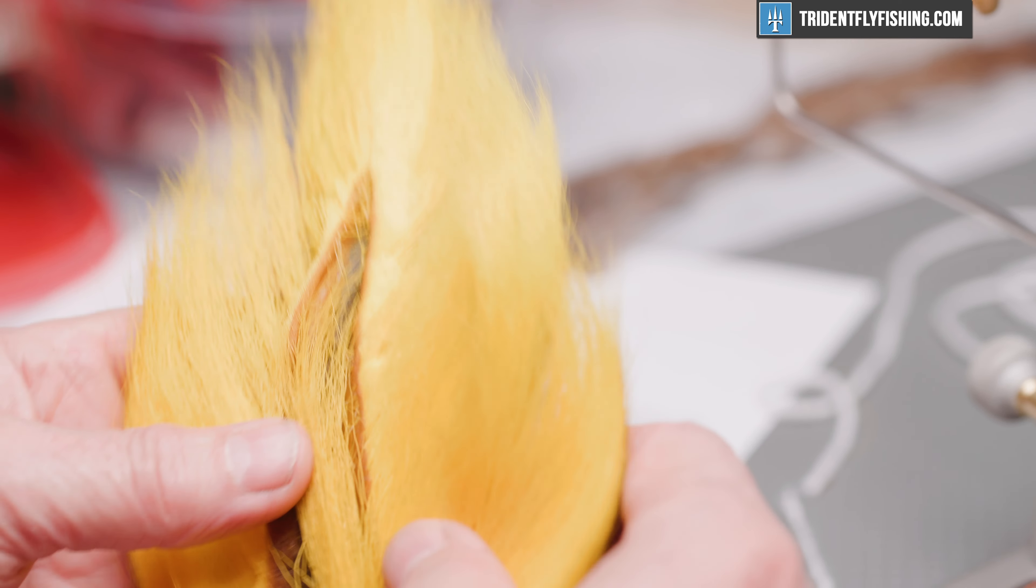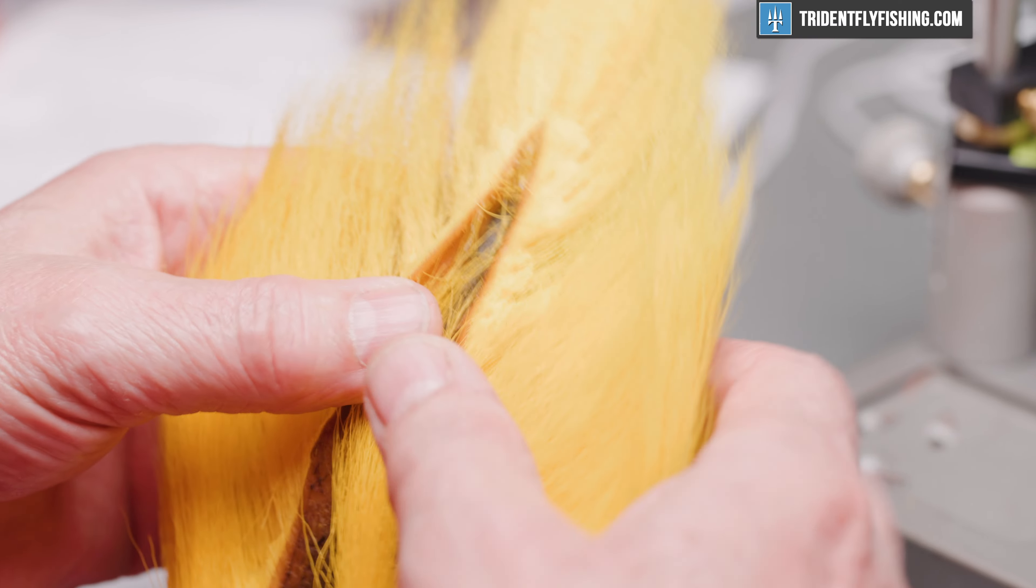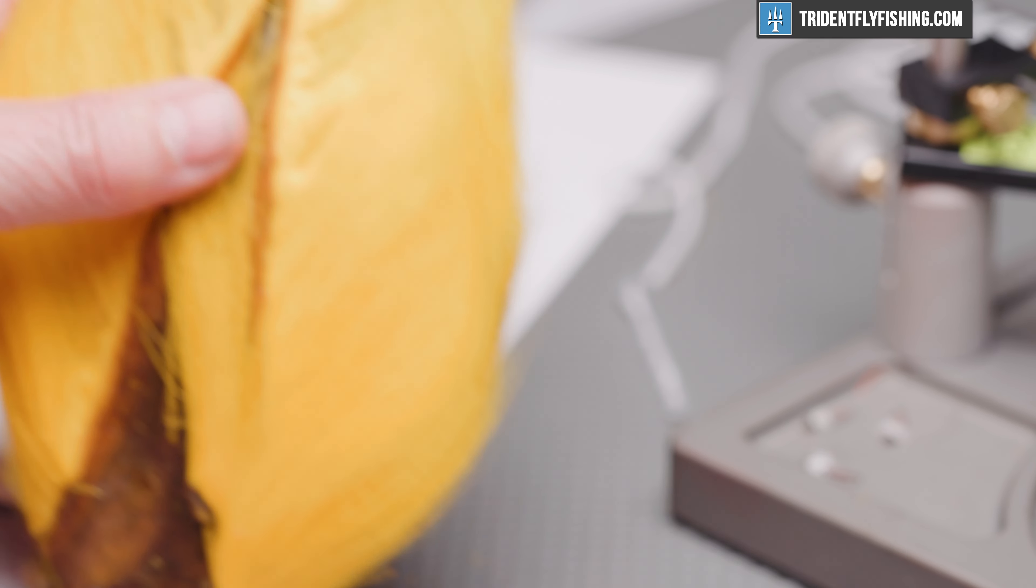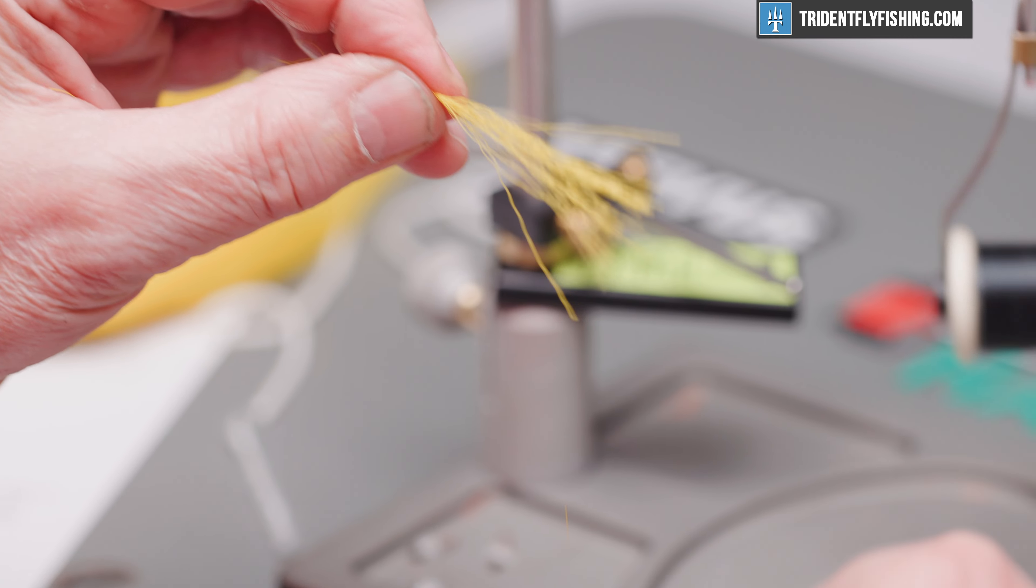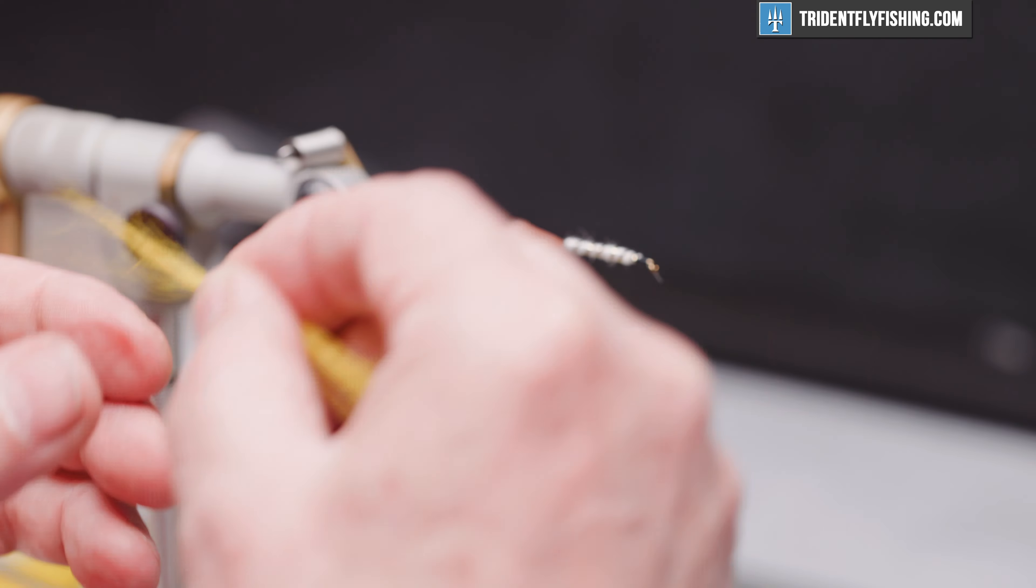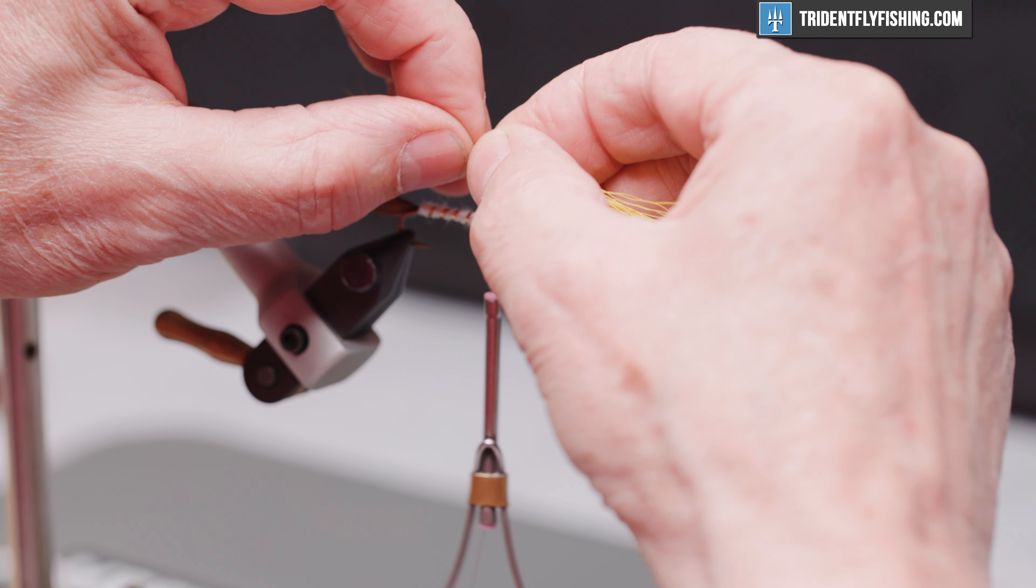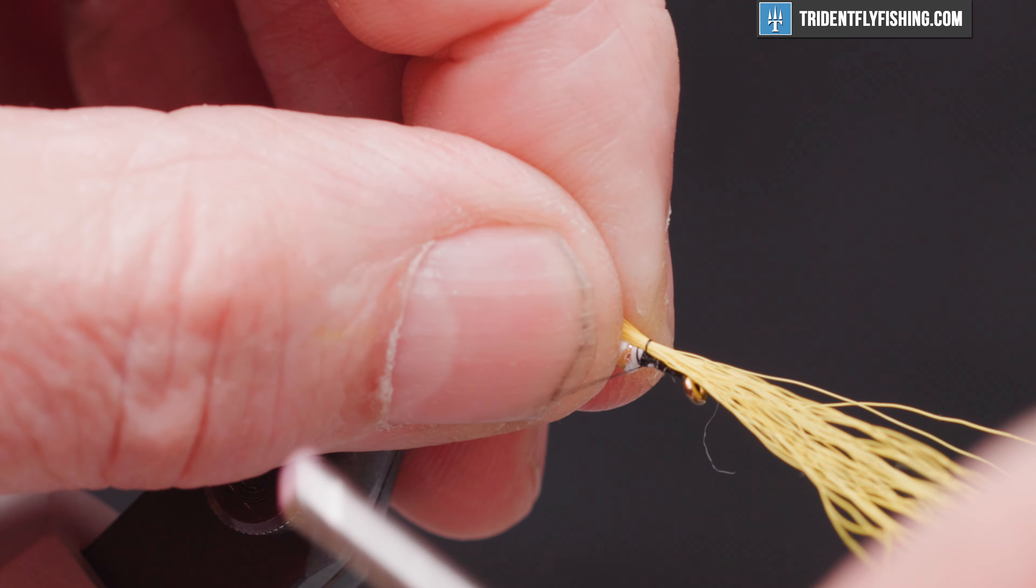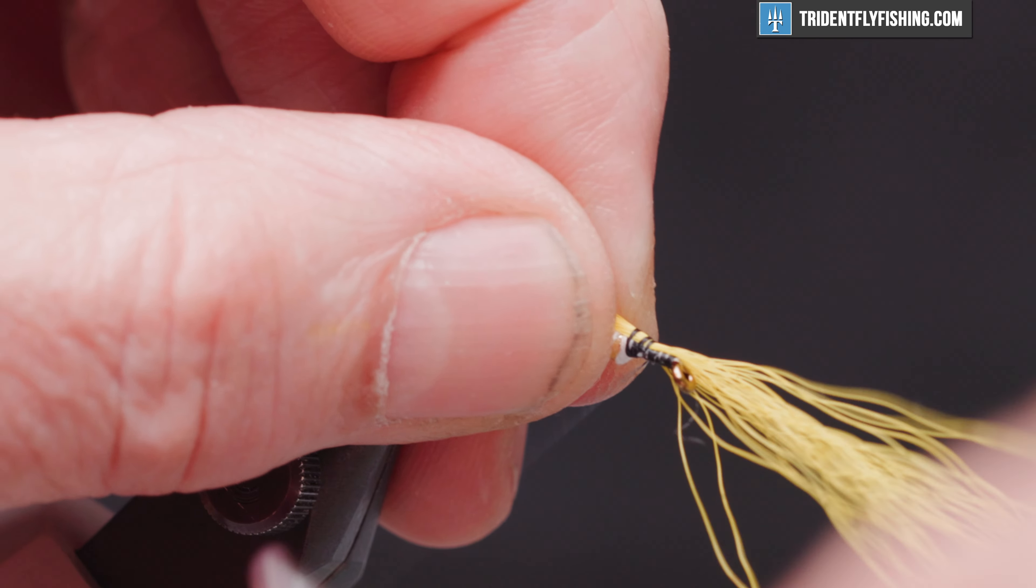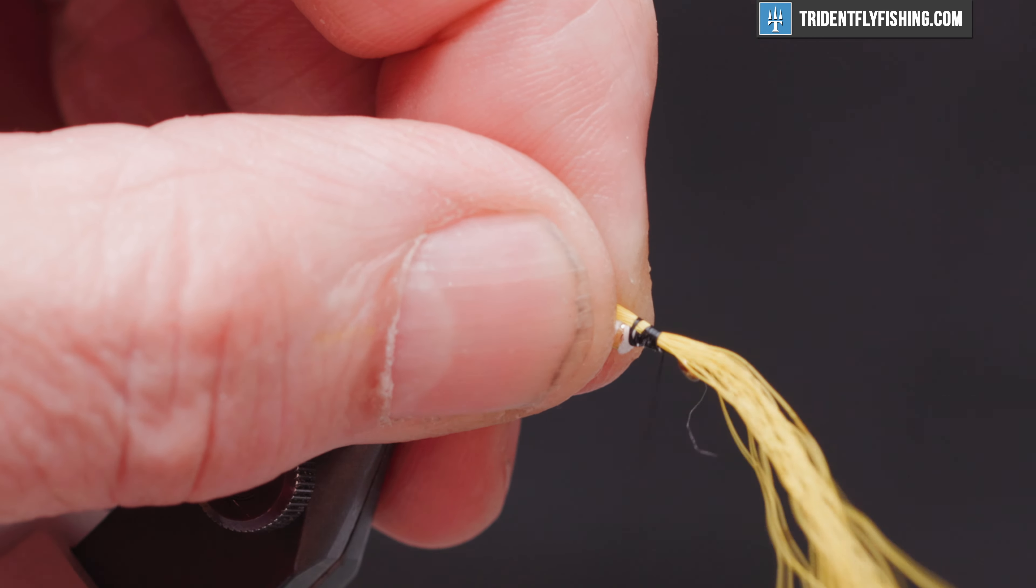And our wing for this fly is going to be made up of three different colors of bucktail and some squirrel, gray squirrel. So the first color that's going to go in is going to be some yellow bucktail. We want this to be fairly sparse. And it looks about right. So I'm going to have this go back just past the tail of the hook. And we'll tie that in.